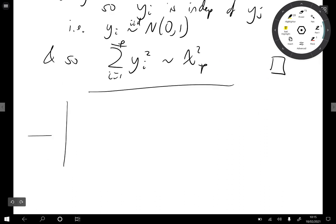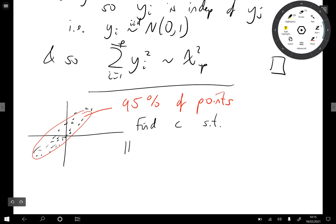So let's again return to our confidence ellipses. Let's suppose we've got our set of points and we want to find an ellipse that contains 95% of points. So what we want to do is find a constant c such that the probability (x - μ) transpose Σ inverse (x - μ) less than c is 0.95.